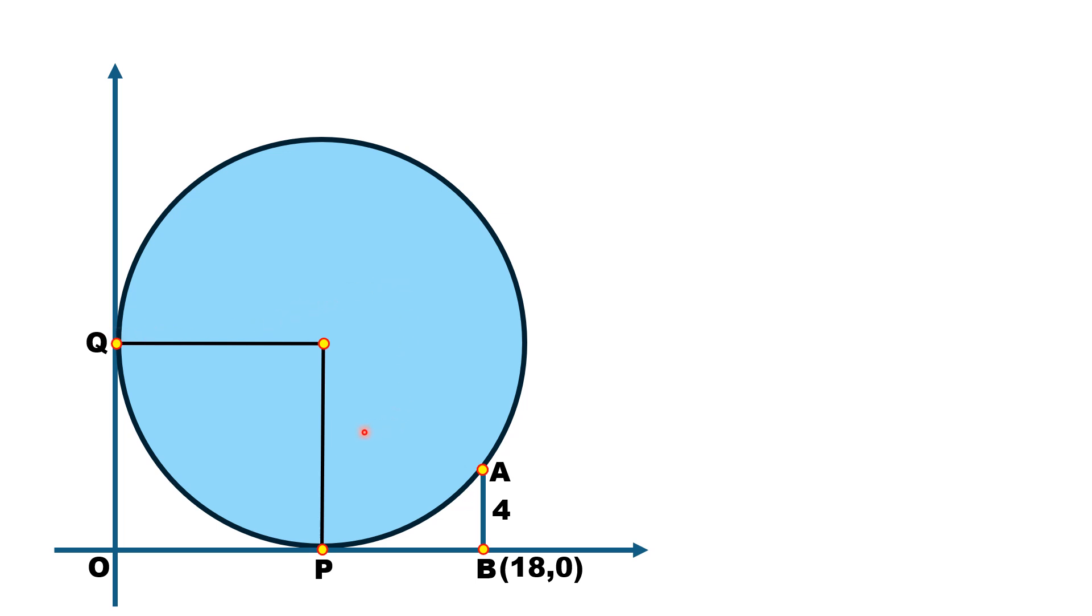Since this length is 4 units, and the whole length is radius r, this portion of the length is r minus 4.